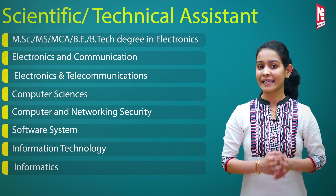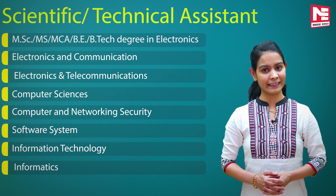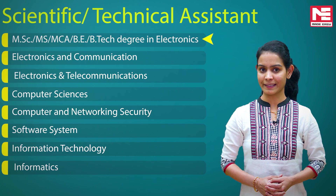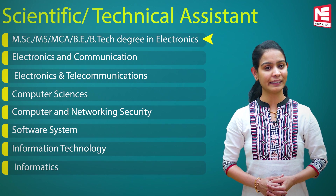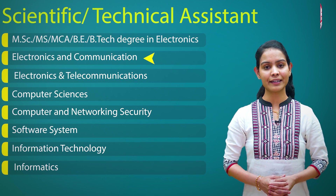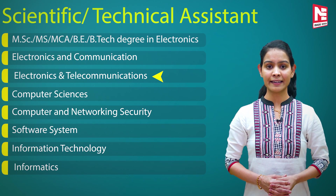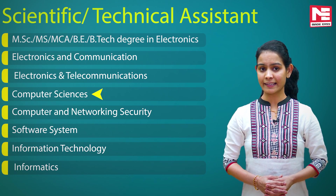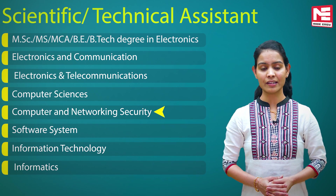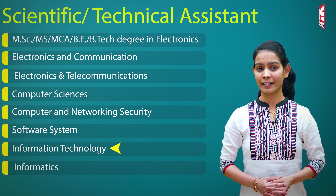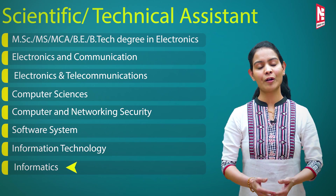Scientific Technical Assistant A mein apply karne ke liye aap ke paas M.Sc., MS, MCA, B.E., or B.Tech degree in Electronics, Electronics & Communication, Electronics & Telecommunications, Computer Sciences, Computer & Networking Security, Software Systems, Information Technology, or Informatics — ya in ke combination mein — honi chahiye. Ek important baat: it is clearly mentioned in the notification that the candidate should have obtained the essential qualification on the date of closing of application form.